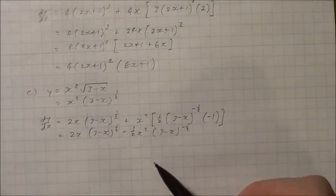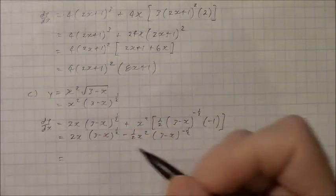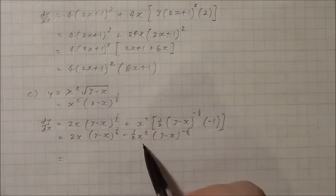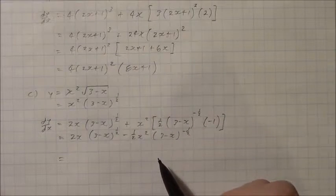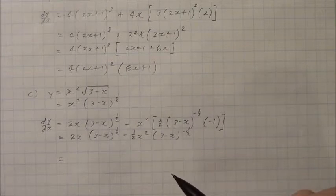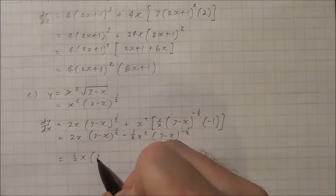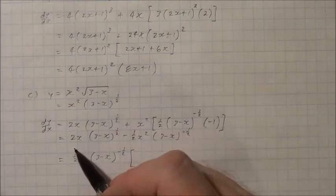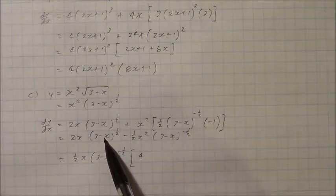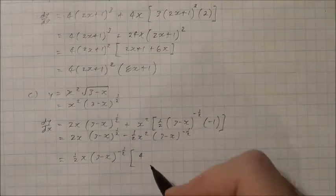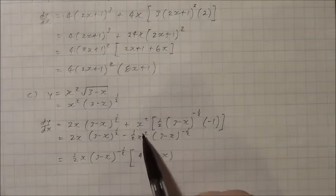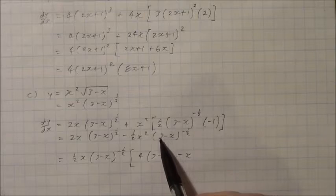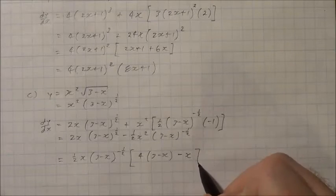Sometimes you need to factor and tidy up, just to leave a nice result. I'll factor out the common factor with the lowest exponent, and also factor out one half and x. Factoring out one half x times 3 minus x to the negative one half: dividing 2x by one half x gives 4, and dividing 3 minus x to the one half by 3 minus x to the negative one half leaves 3 minus x. Dividing negative one half x squared by one half x leaves negative x, and dividing the remaining 3 minus x to the negative one half by itself leaves 1.